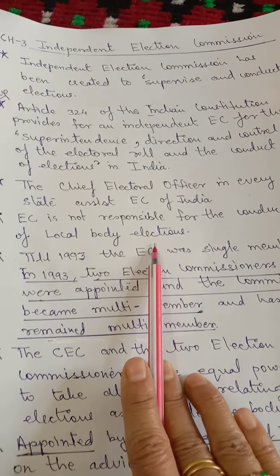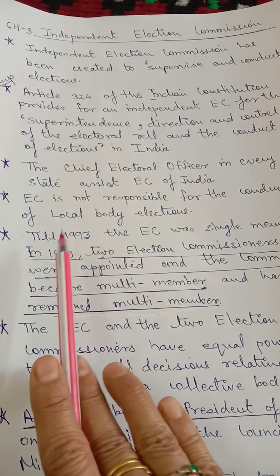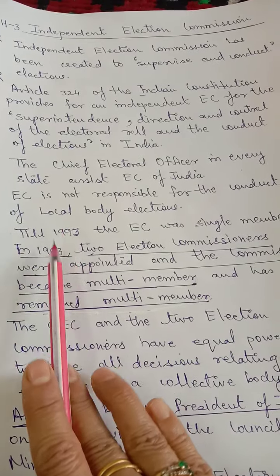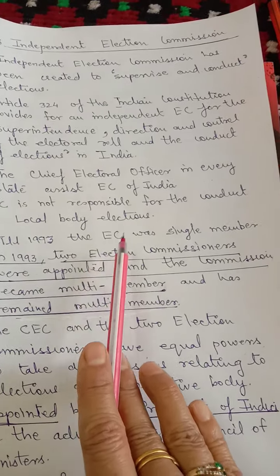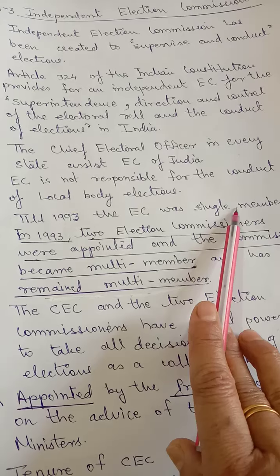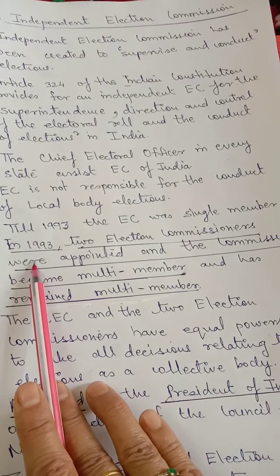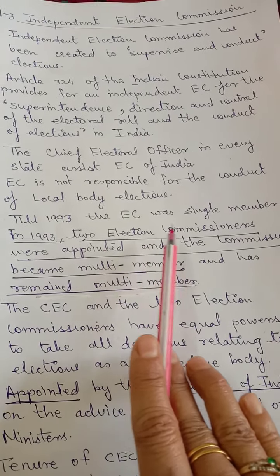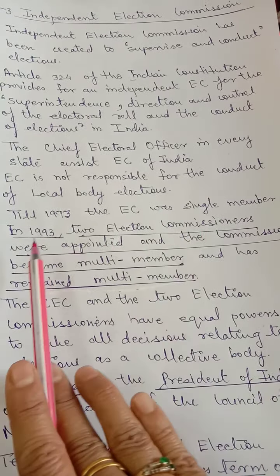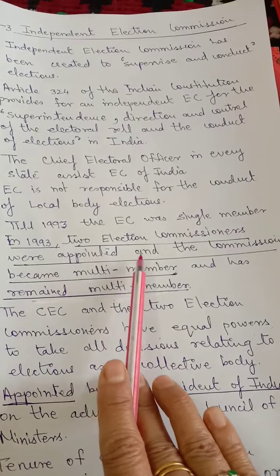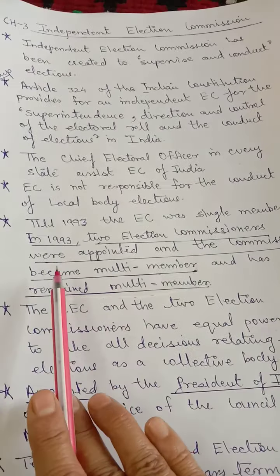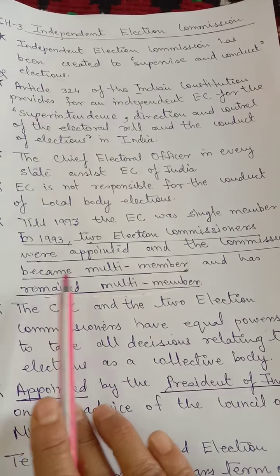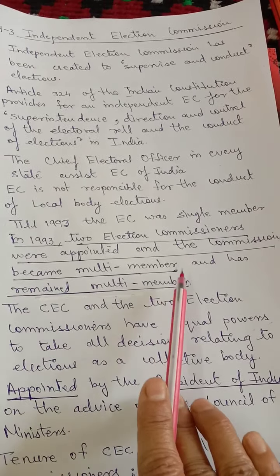Now, here you have to remember that till 1993 — that is, prior to 1993 — the Election Commission was a single-member body. But in 1993, two Election Commissioners were appointed with the Commission, and the Commission became multi-member and has remained multi-member since then.